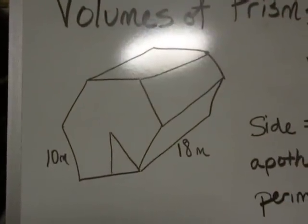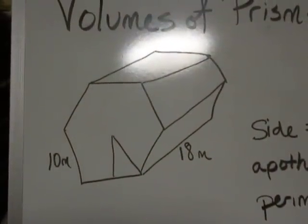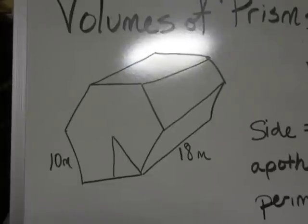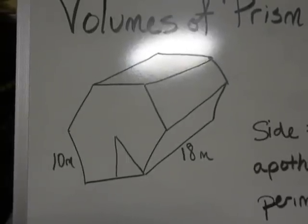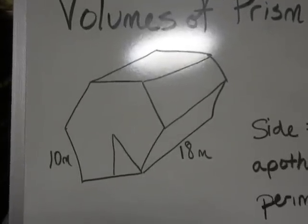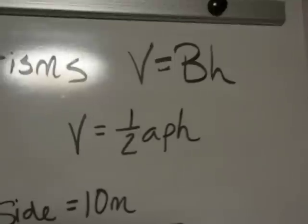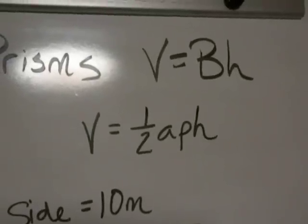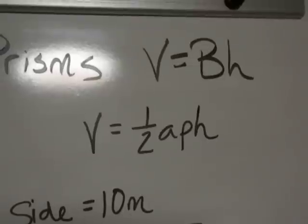This is a hexagonal prism. So the base, when it's a regular hexagon, is found with the formula one-half apothem times perimeter. That means the volume formula for this shape is one-half apothem times perimeter times height.